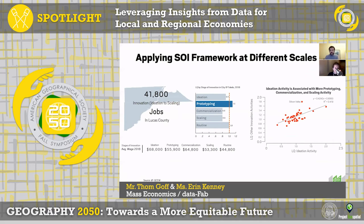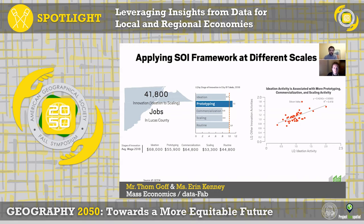On the right-hand side, looking nationally, you can see different MSAs and how ideation activity on the x-axis is associated with the later stages of innovation. On the left side, looking at Florida, Ohio, and Lucas County — Lucas County would possibly be an extremely strong prototyping hub. That's carried downstream into strategy development around becoming a prototyping hub and building out related activities, and also real estate space to support that prototyping activity.